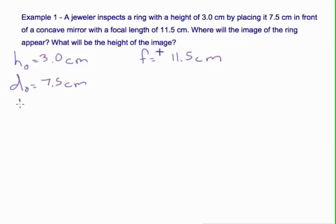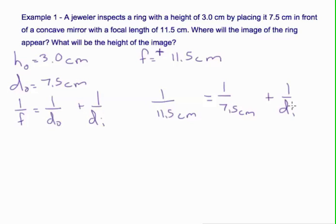You can use the equation 1 over the focal length equals 1 over the distance of the object plus 1 over the distance of the image. And what we're going to do is subtract this from both sides because it's being added here.